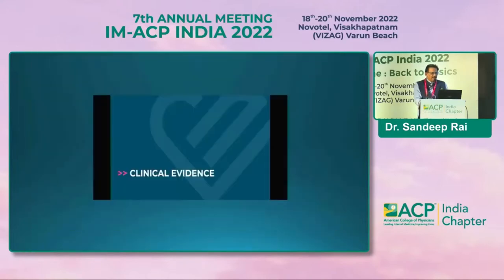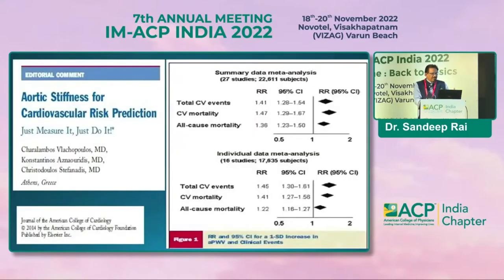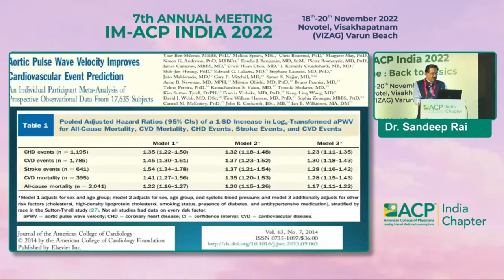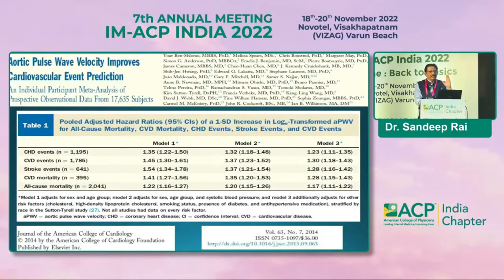Aortic stiffness is a risk predictor, as shown in a study in the American Journal of Cardiology. Aortic pulse wave velocity improves cardiovascular event prediction. The first use is preventive: if you detect a stiff artery early in the course of disease and take proper measures — including lifestyle changes and treatment — you are going to prevent heart disease.